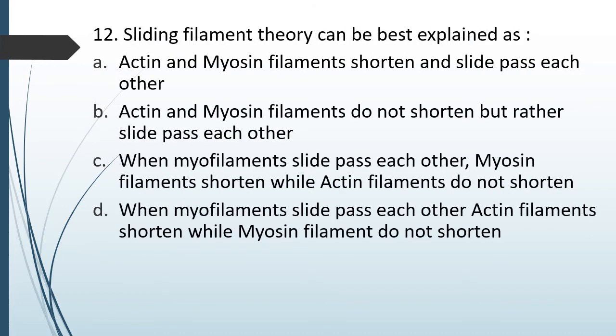Question No. 97: Sliding filament theory can be best explained as — Option A: Actin and myosin filaments shorten and slide past each other. Option B: Actin and myosin filaments do not shorten but rather slide past each other. Option C: When the myosin filaments slide, the myosin filaments shorten while the actin filaments do not shorten. The correct answer is Option B — actin and myosin do not shorten, they just slide past each other.